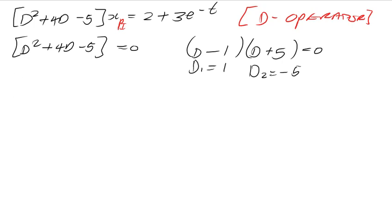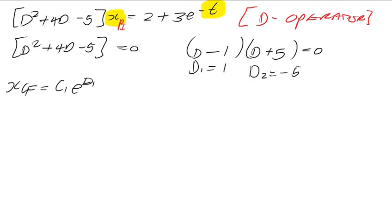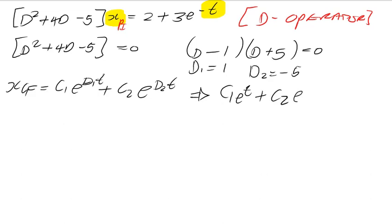Because they said x (not y), we call this x_cf. The x_cf equals c₁e^(D₁·t) plus c₂e^(D₂·t). In this case the independent variable is t, not x. So x_cf equals c₁e^t plus c₂e^(−5t). This is your x_cf.